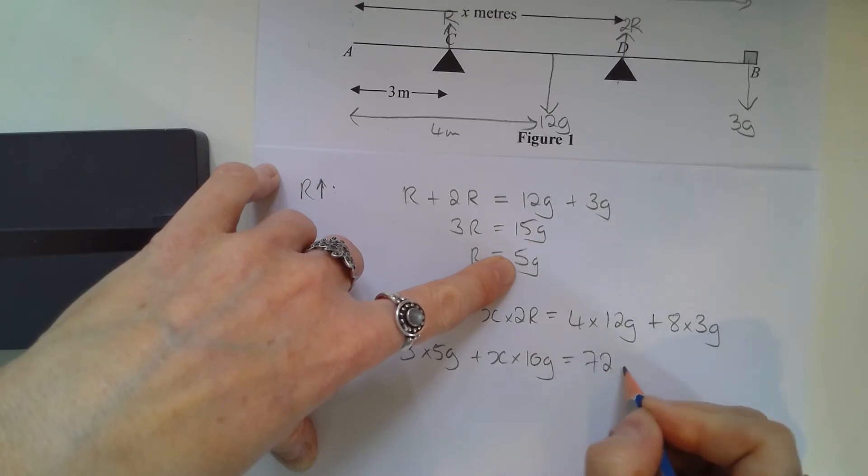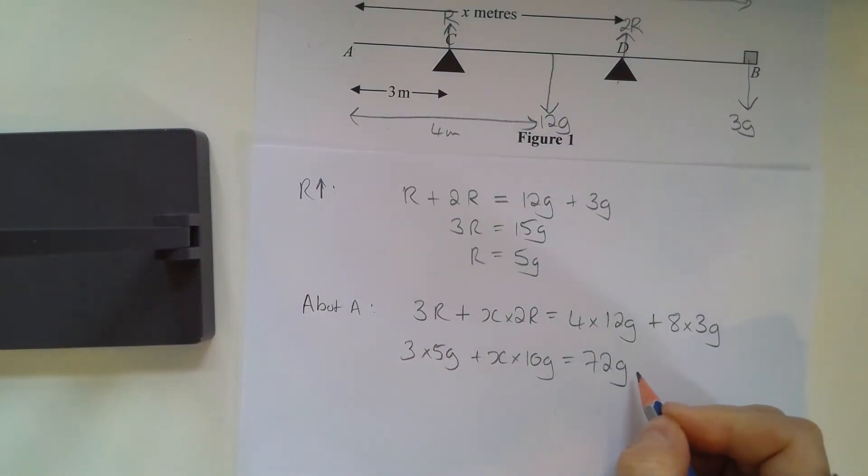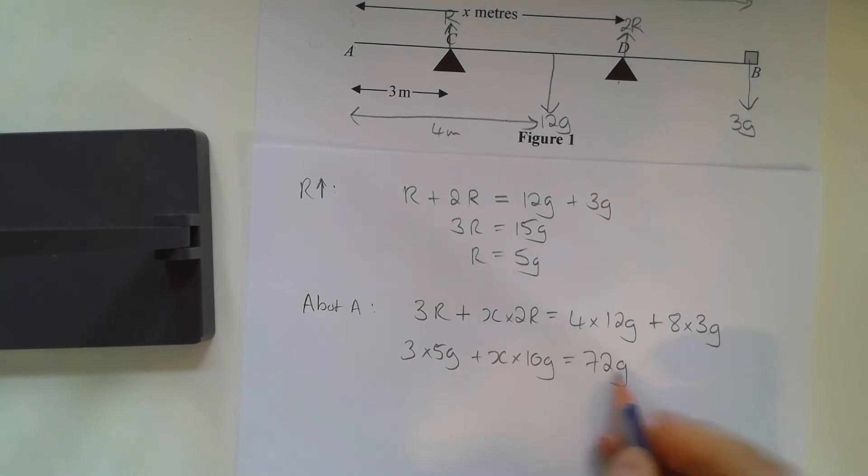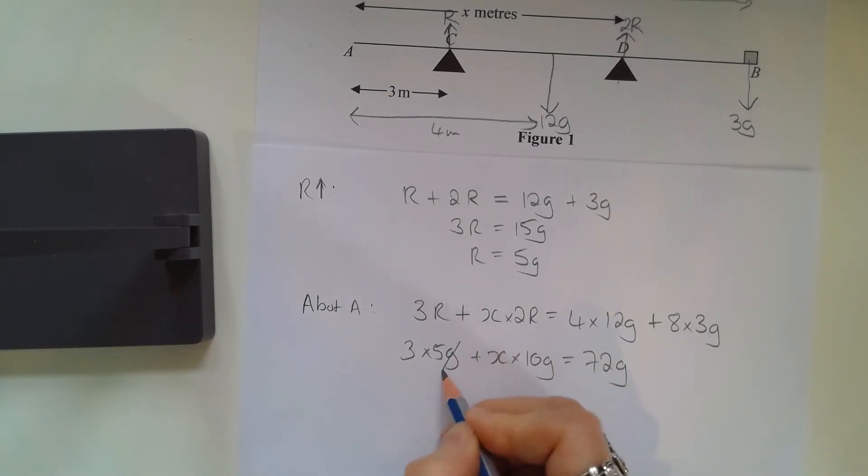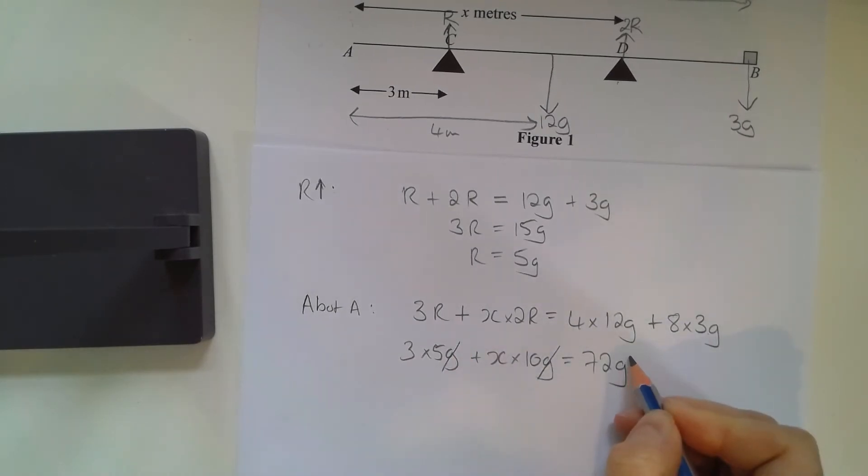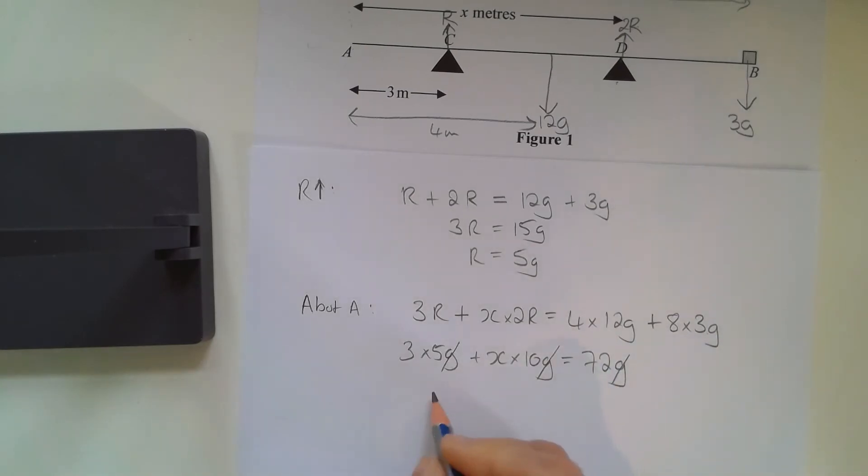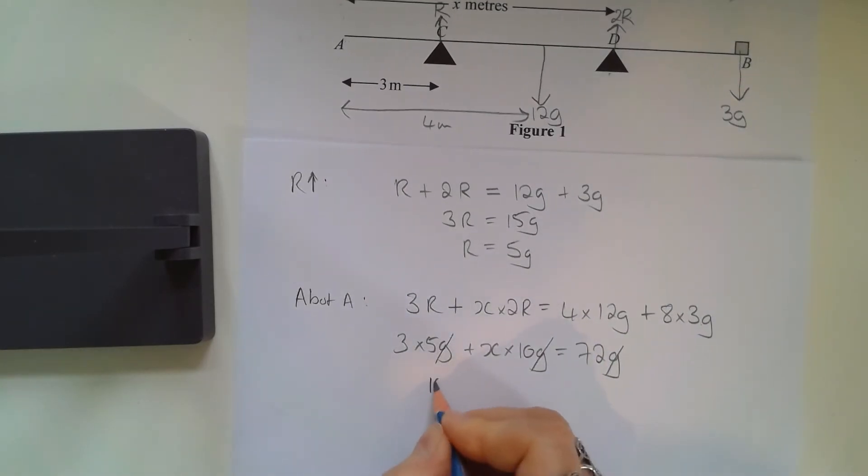Now you'll notice that all of the terms are multiplied by g, so I can divide through the equation. I can divide every term in the equation on each side by g, so that simplifies down to 15 plus 10x equals 72. So 10x equals 57.